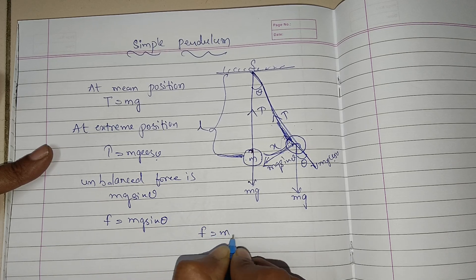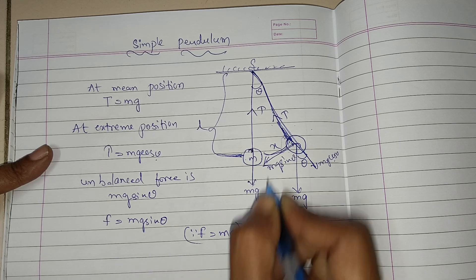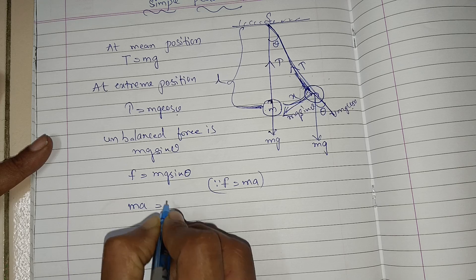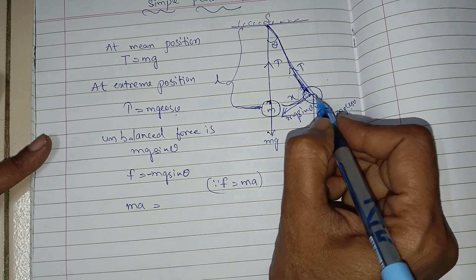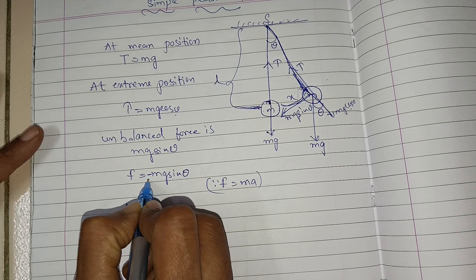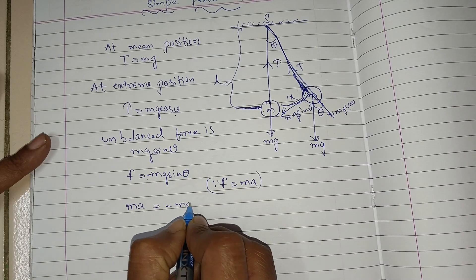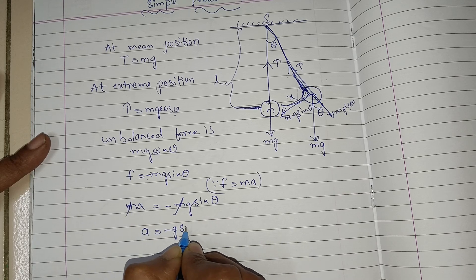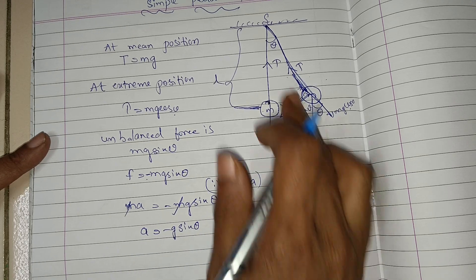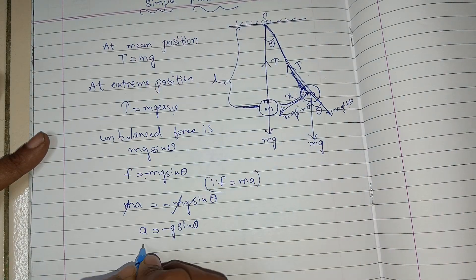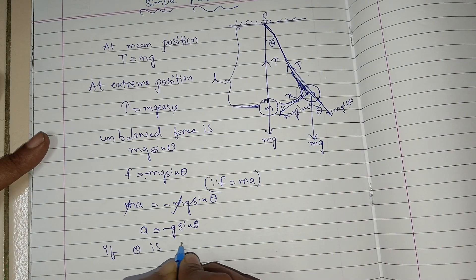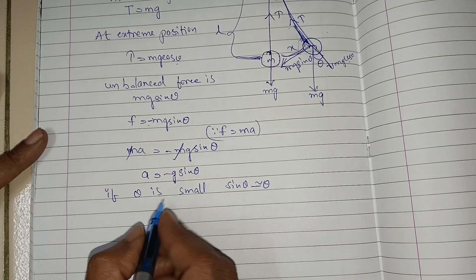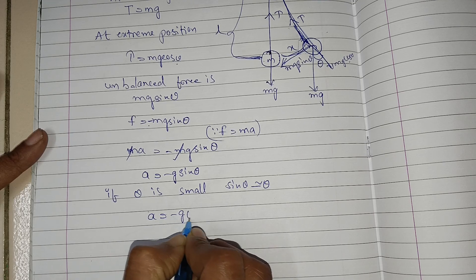From Newton's second law, F is equal to MA. Whatever force you are applying in this direction is equal to MA. So MA is equal to minus Mg sin theta — the negative sign is because the force and Mg sin theta act in opposite directions. M cancels, giving A is equal to minus G sin theta. Since theta is very small, sin theta is nearly equal to theta, so A is equal to minus G theta.